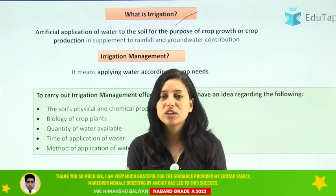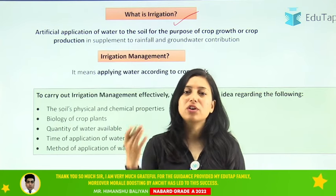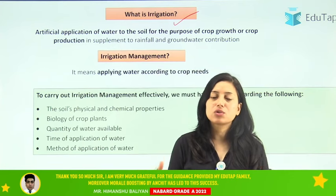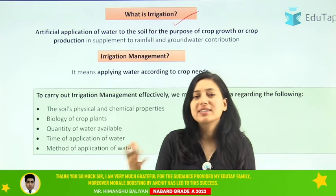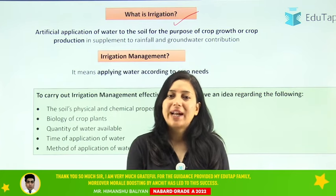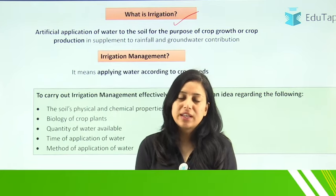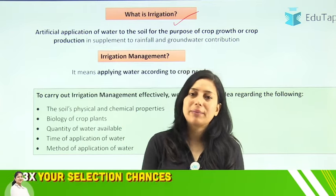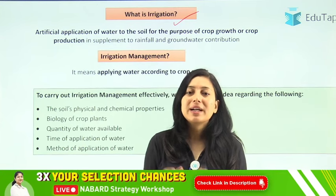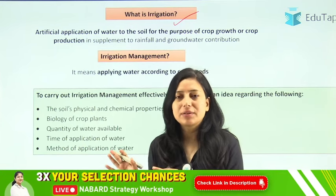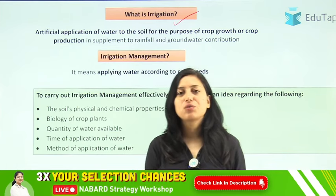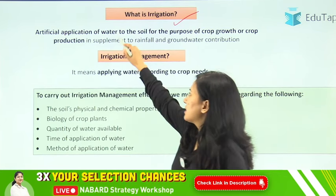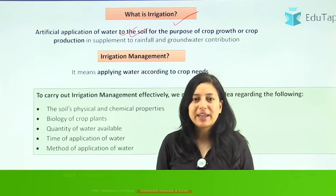Basically, irrigation is the artificial application of water to crops in order to supplement groundwater or rainfall requirements. We have natural sources of water available to plants — for example, plants can take up water from groundwater and from rainfall. But apart from that, there is an additional requirement of the crop that we fulfill through irrigation. So irrigation is basically artificial application of water to supplement groundwater and rainfall.